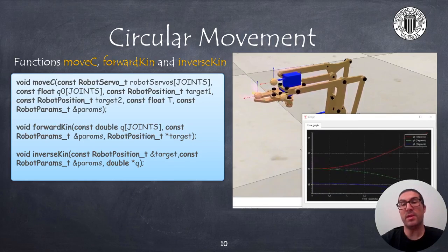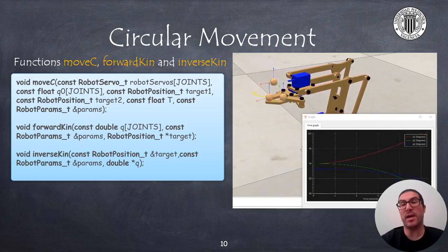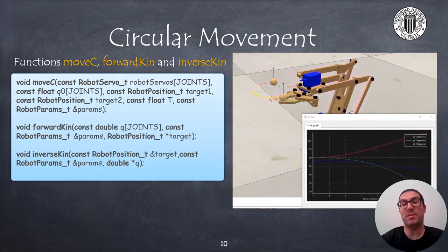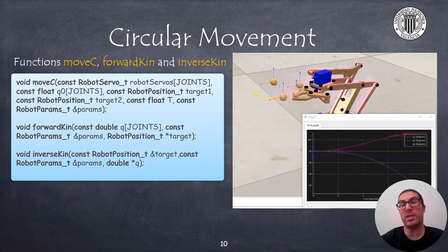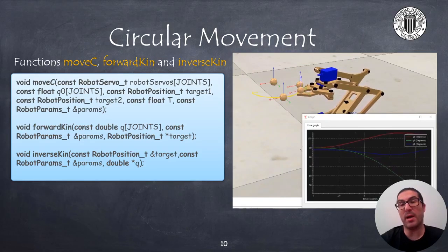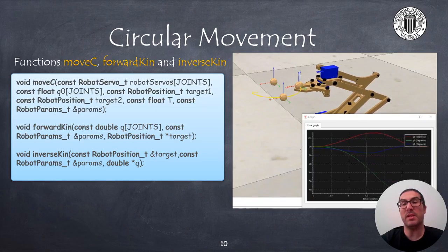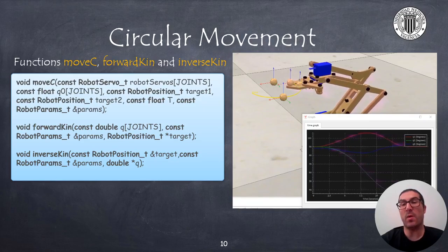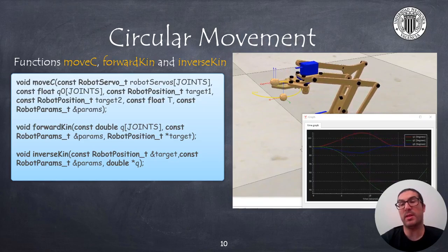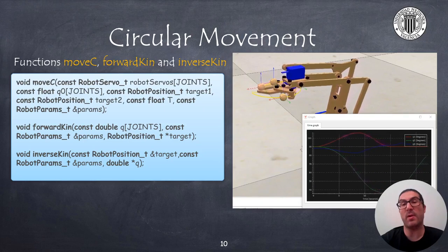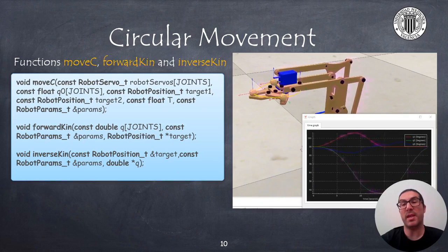Here, I show the definition of the movec function that you must implement. This function must reproduce the same as the instruction in rapid under the same name, and as it can be seen in the video, first it describes a horizontal circular path described in the x-y plane, and then it performs a circular path defined in the x-y plane.